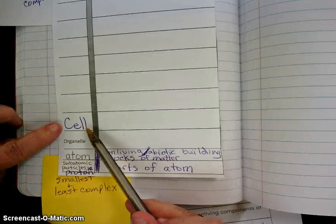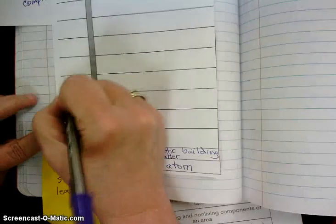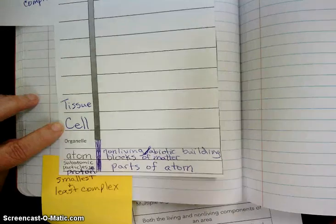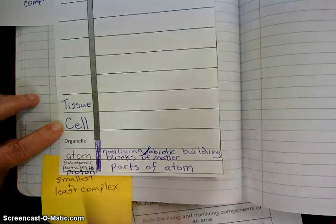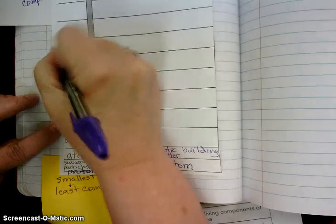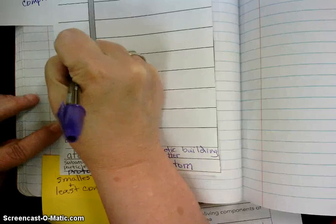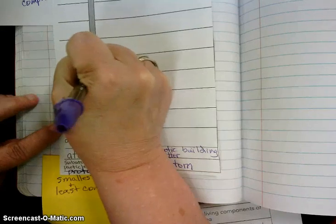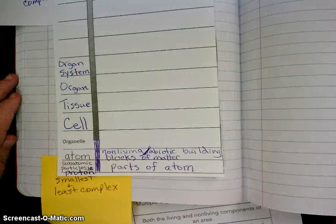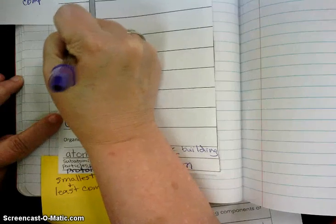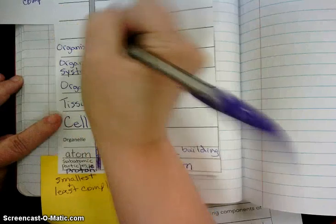If I have a group of cells, it makes a tissue. A group of tissues working together makes an organ. A group of organs working together makes an organ system. A group of organ systems working together forms an organism. Although some organisms are only one cell.